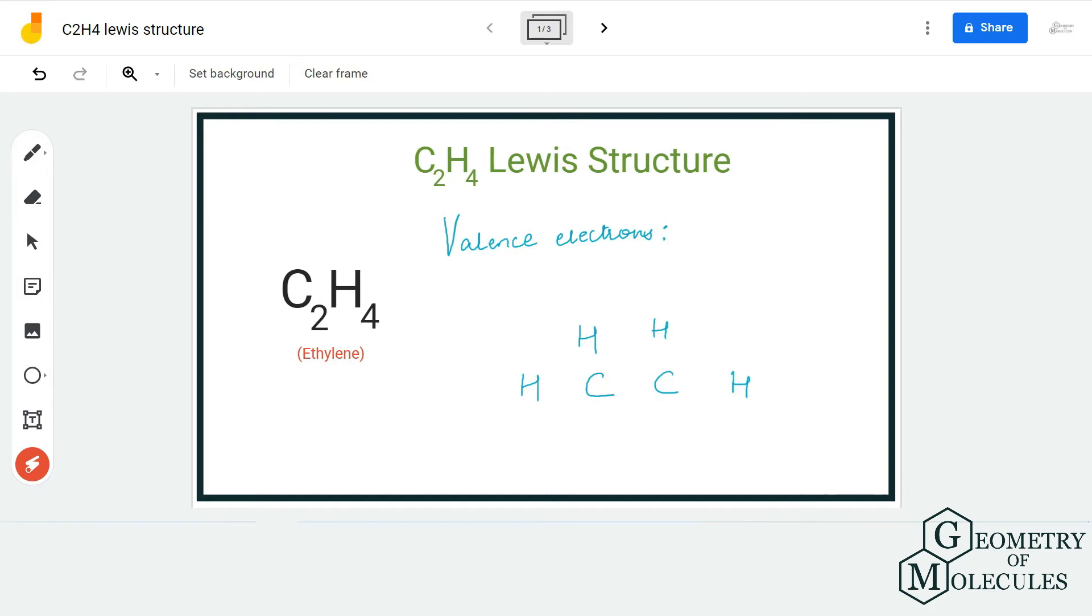Hi guys, welcome back to our channel. In today's video we are going to help you determine the Lewis structure for C2H4. It is also known as ethene or ethylene. To determine its Lewis structure, we are first going to find out the total number of valence electrons for this molecule.